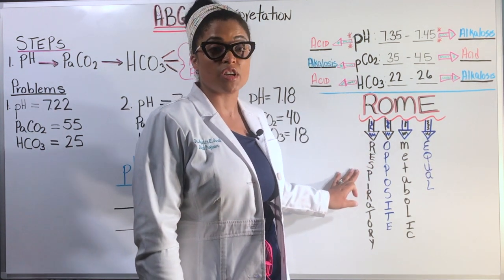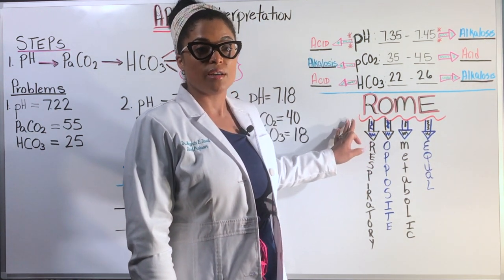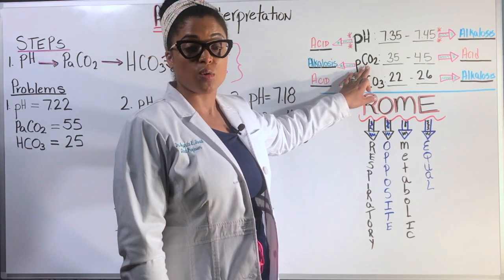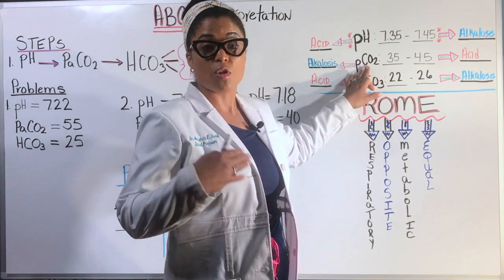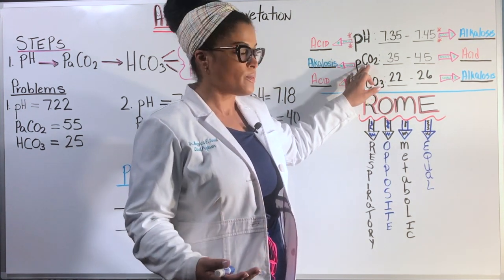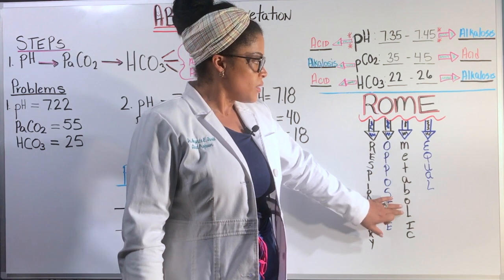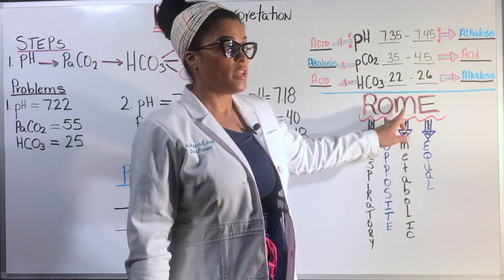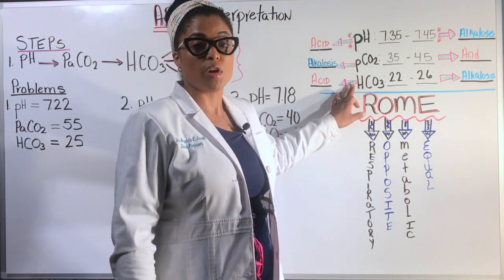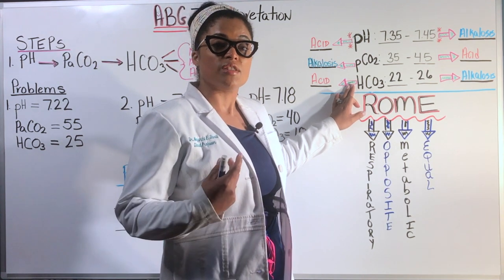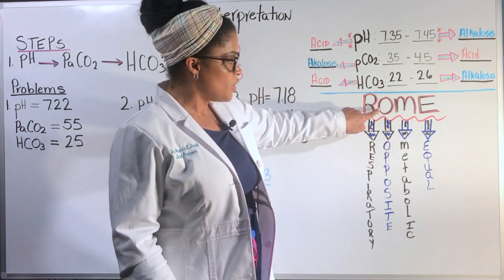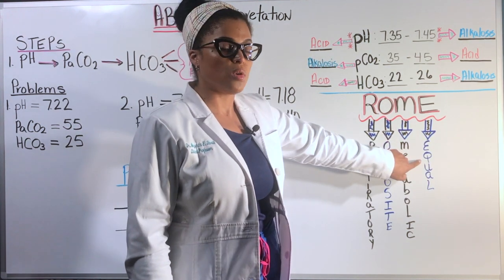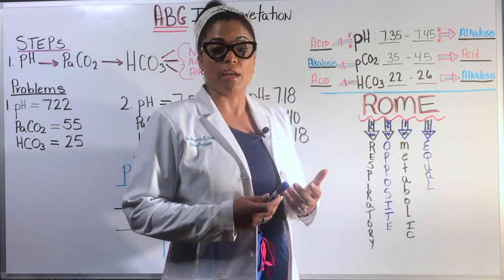This is what ROME stands for. The R stands for respiratory. The R is talking about the CO2 level or the carbon dioxide level, which as you saw from the previous video, is monitored by your lungs. The metabolic, which is the M of ROME, is talking about the bicarb or the HCO3, which is the parameter that's monitored by your kidneys. And when you're dealing with opposite or equal, that is referring to the relationship with the pH.